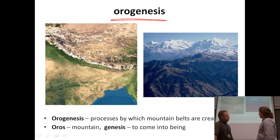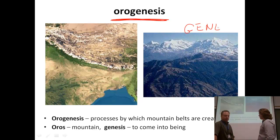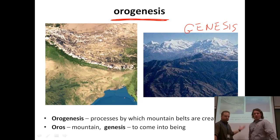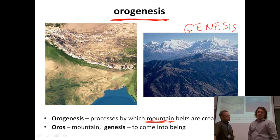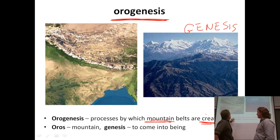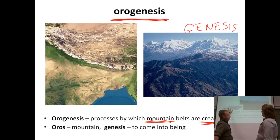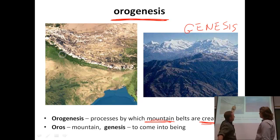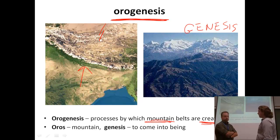Oro means mountain and genesis means to come into being — the beginning of something. So orogenesis is a fancy word for mountain building. That's a huge term in geology — orogenesis, and orogeny as well. A big chunk of land could have slammed into another chunk of land and pushed up all those mountains. That's exactly what happened — that's a mountain building event, an example of orogenesis.